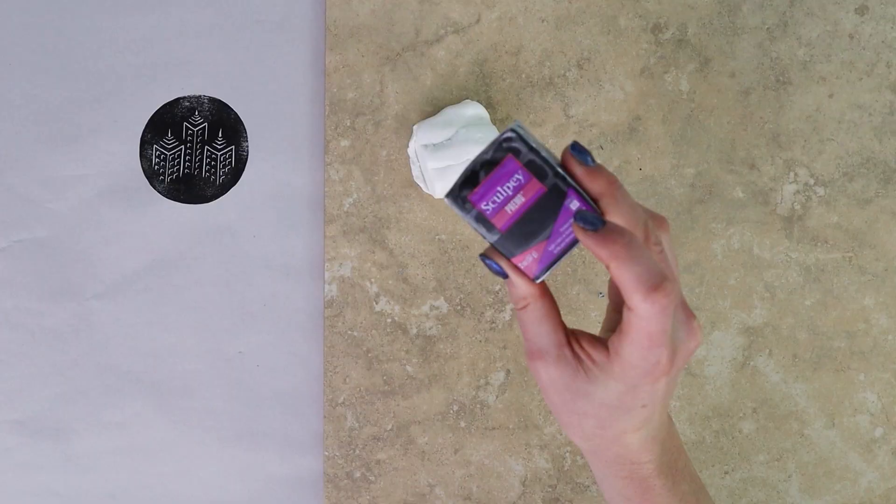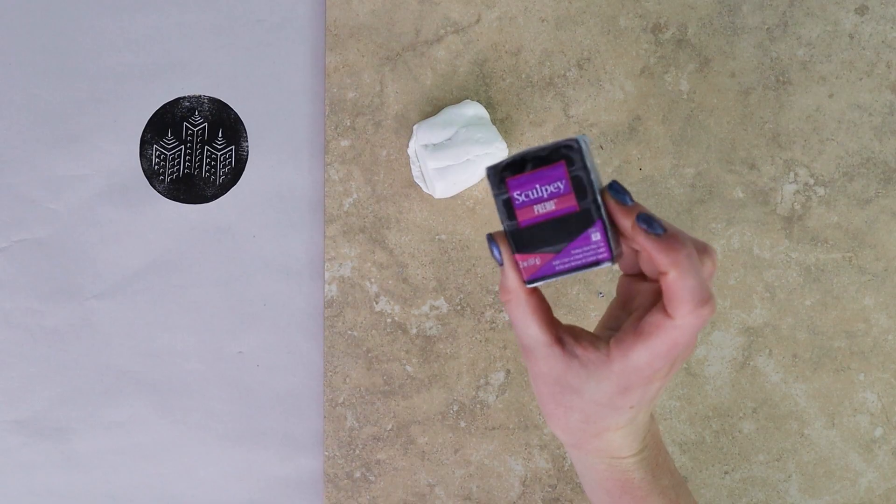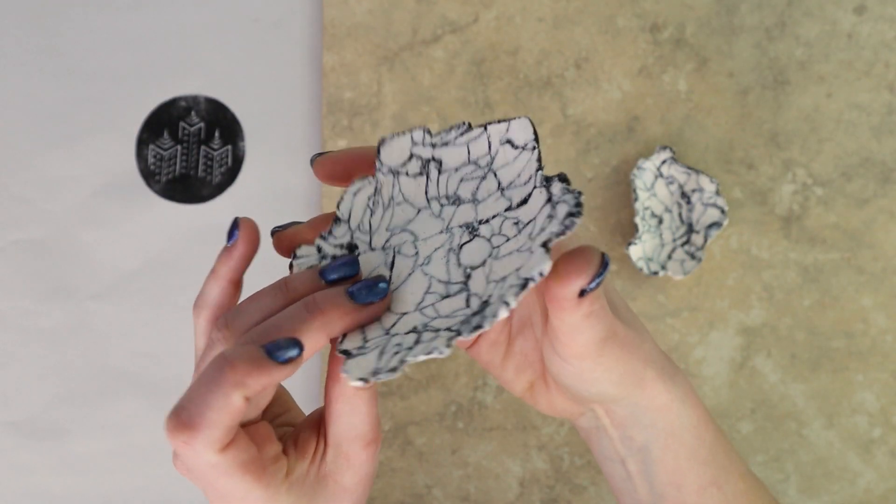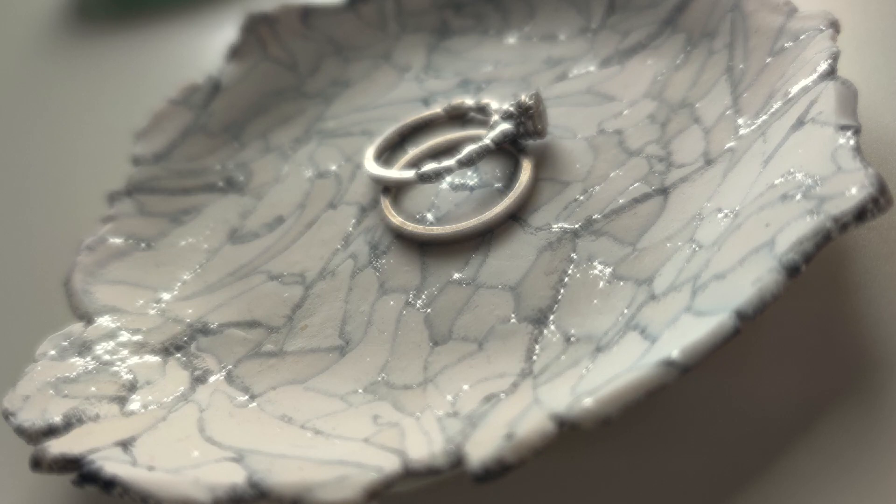Polymer clay is a fantastic material for imitating other surfaces. It can be made to look like everything from gemstones to leather. Today we're going to show you how you can transform this lightweight modeling clay into a lifelike marble surface with shimmering details.